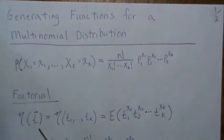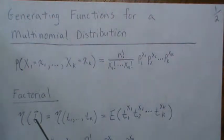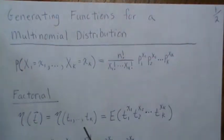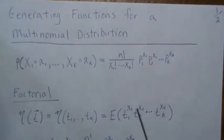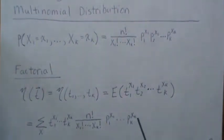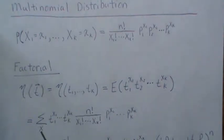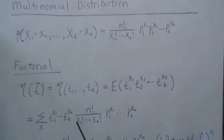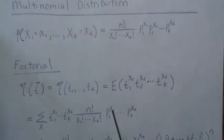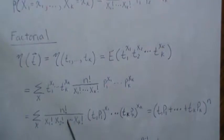So the factorial moment generating function—now these are vectors—so eta of t, but t is a vector. It can be thought of as this, and then that is defined as the expected value of t1 raised to x1, t2 raised to x2, tk raised to xk. So that says stick this in times the probability mass function summed over all possible values. This notation says sum over all possible x1 through xk with the restriction that they sum to n.